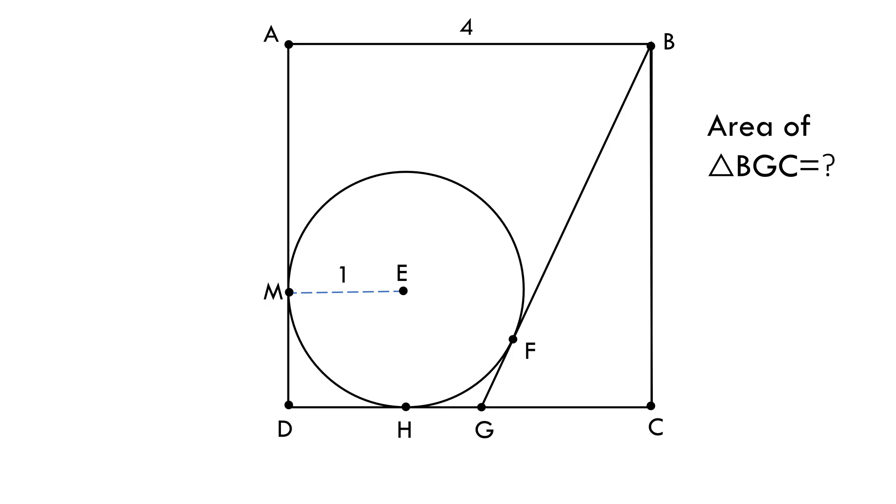So the very first thing that we need to understand is we need the base and height of the triangle BGC to be able to find its area. Base BC has already been given to be 4 units. Now we must try to find height GC.